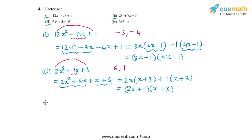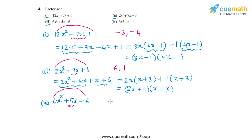The third polynomial is 6x² plus 5x minus 6. I need to find two numbers whose sum is equal to 5 and whose product is equal to minus 36. Those two numbers will be a combination of 9 and 4, because the difference of 9 and 4 is 5. Taking 9 and minus 4: the product is minus 36 and the sum is 5.